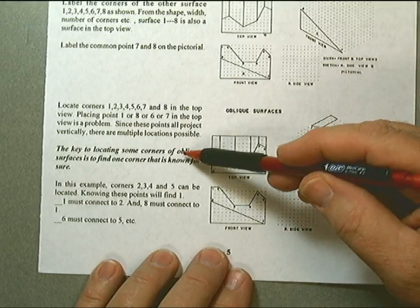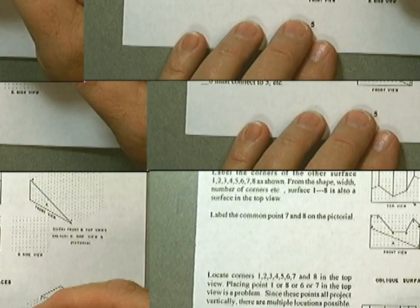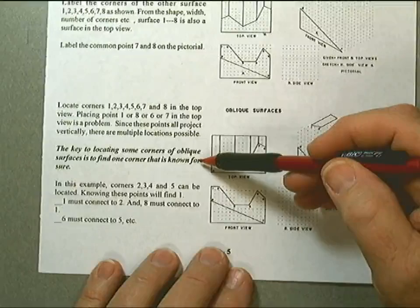The key to finding some corners of oblique surfaces is to find one corner that is known for sure.